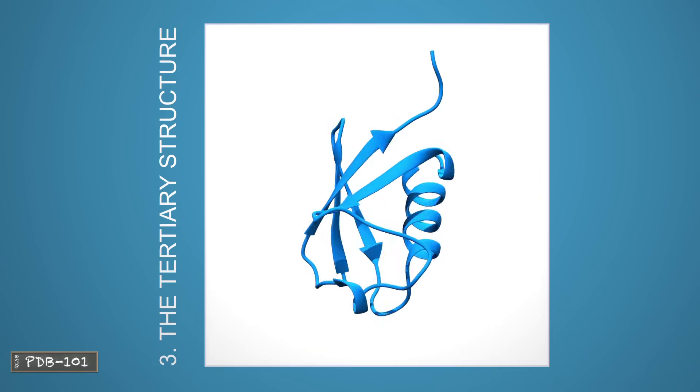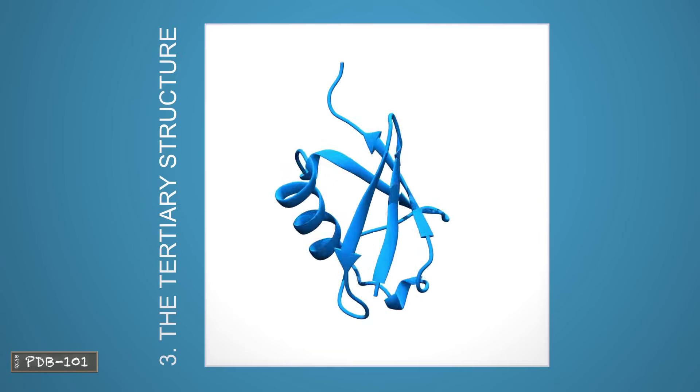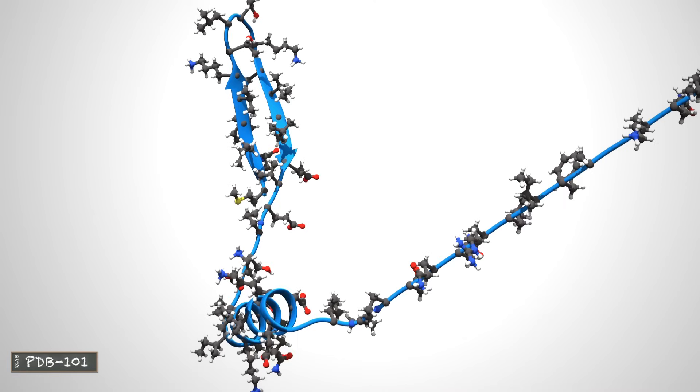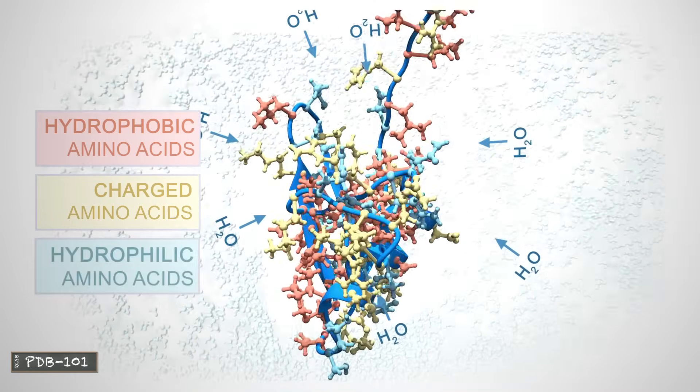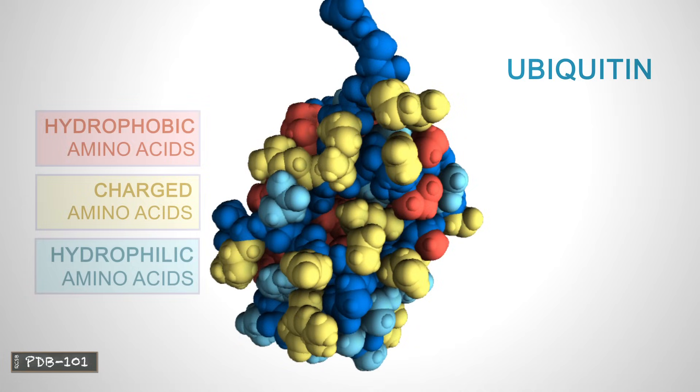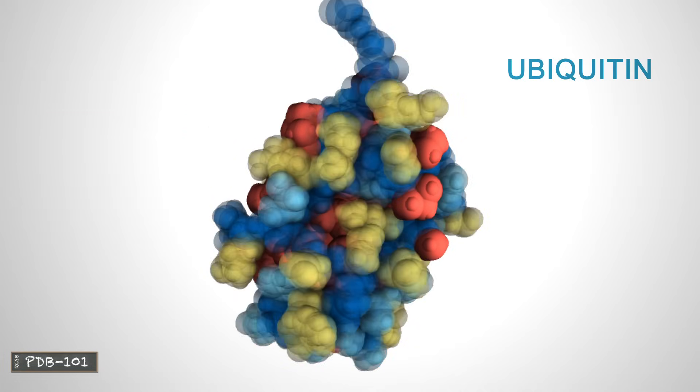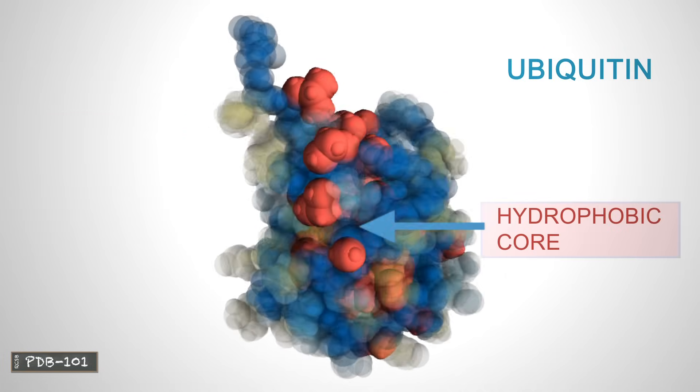The tertiary structure of a protein is the three-dimensional shape of the protein chain. This shape is determined by the characteristics of the amino acids making up the chain. Many proteins form globular shapes with hydrophobic side chains sheltered on the inside, away from surrounding water molecules.